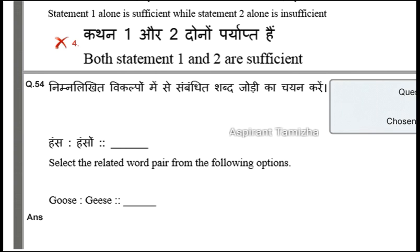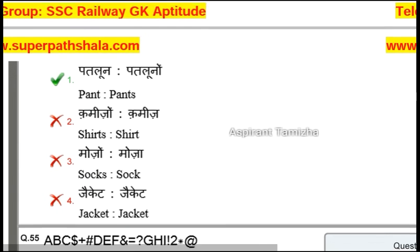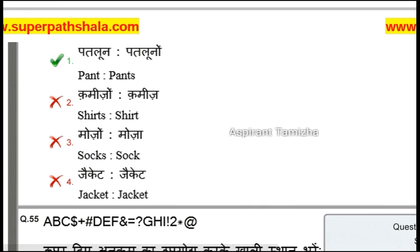Another reasoning question: goose — geese, the plural form. Pants, shots, socks — plural forms. Jacket.